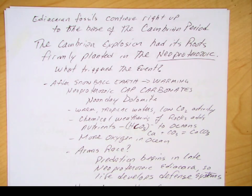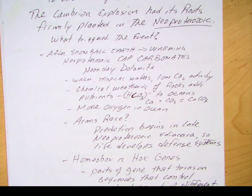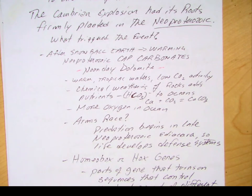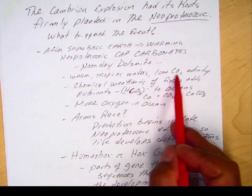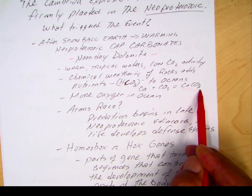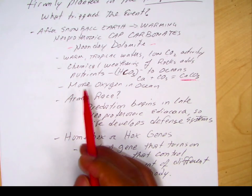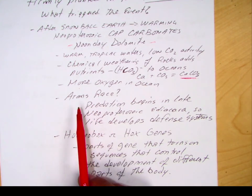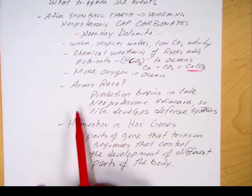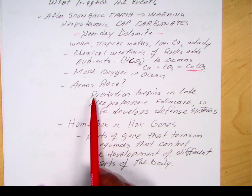The question is: what triggered the appearance of hard body parts? We know there was Snowball Earth, and after that event there was a dramatic warming — maybe volcanic eruptions somehow warming up the planet. The capped carbonates, like the Noonday Dolomite in Death Valley, require warm tropical waters where CO2 activity is low, meaning you're not making carbonic acid and allowing precipitation of calcium carbonate — limestone. We're also seeing more oxygen in the ocean. There may also have been an arms race: organisms were developing hard body parts to protect themselves from predators, since by the end of the Ediacaran/Vendian time we see animals with teeth, and predation becomes quite prevalent — with prey developing a defense mechanism.